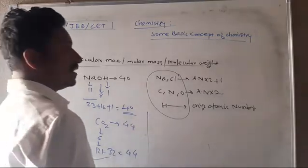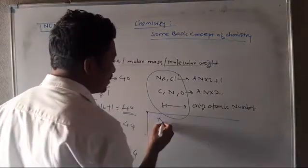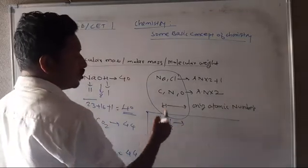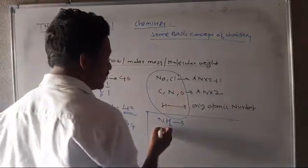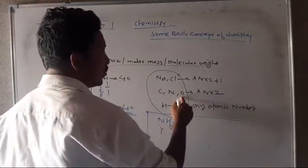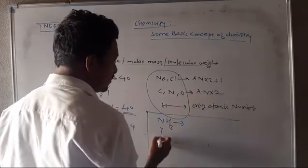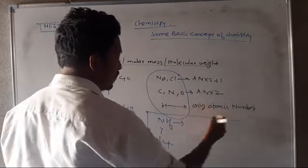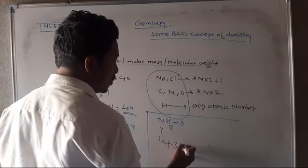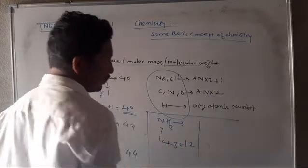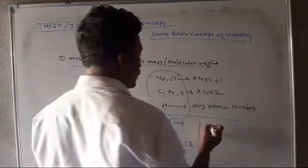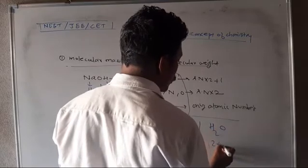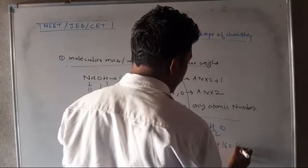The next example is NH3. Nitrogen has atom number 7. Hydrogen is atom number 1. NH3: nitrogen 14, plus hydrogen 1 times 3 equals 17. For H2O: hydrogen is 1 times 2, oxygen is 16, giving molecular weight 18.